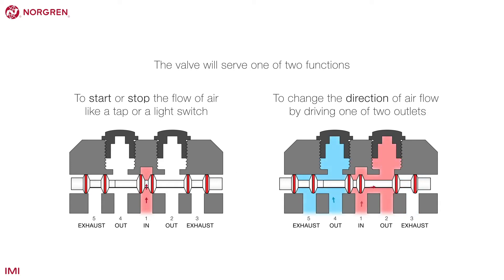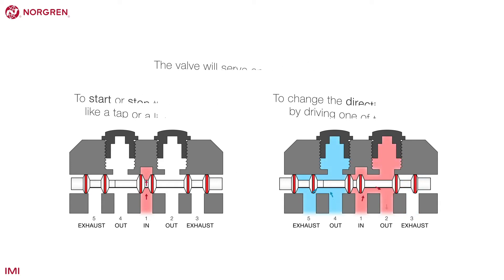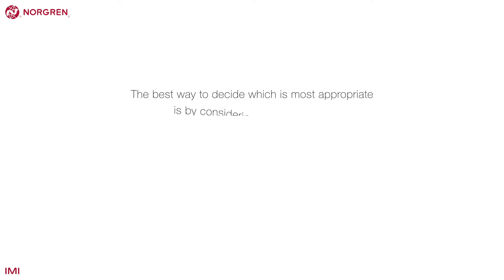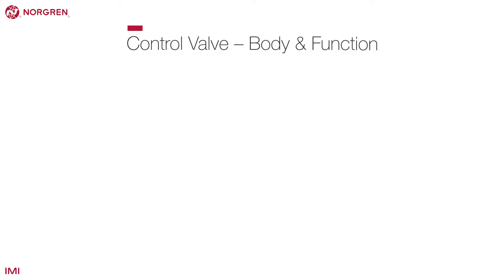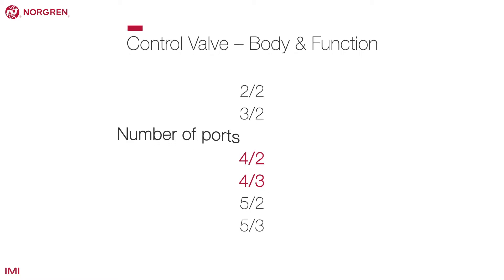There are a number of valves to choose from. The best way to decide which is most appropriate is by considering valve body and function, valve operator, and valve size. The function of a valve is determined by two attributes: the number of ports and the number of positions.